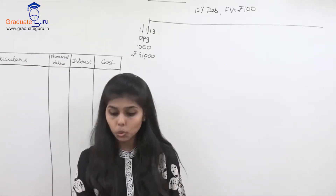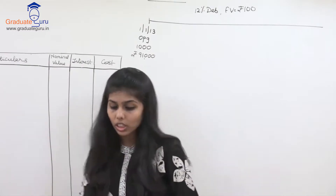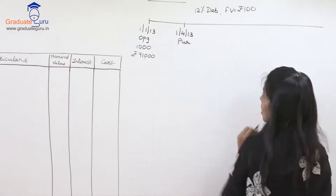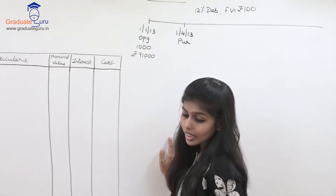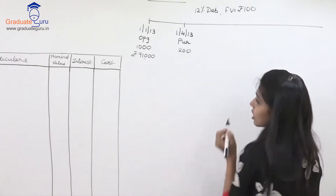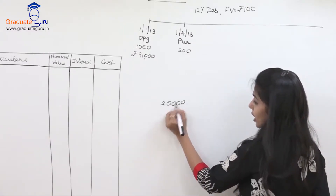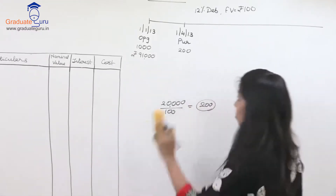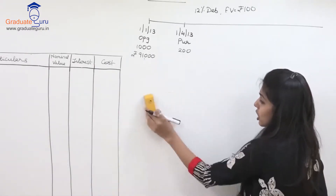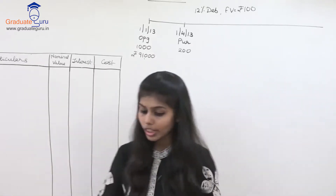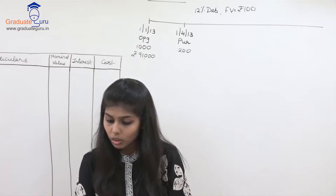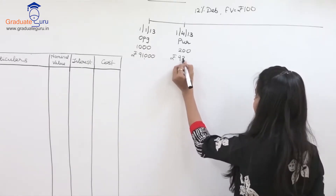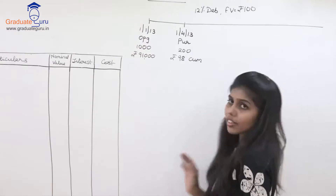On 1st April 2013, Rs. 20,000 of such debentures were purchased — that means 200 debentures (since face value is Rs. 100 each). These were purchased at Rs. 98 cum interest. So I write 'cum' here. The nominal value is Rs. 20,000, representing 200 debentures purchased at 98 cum interest.